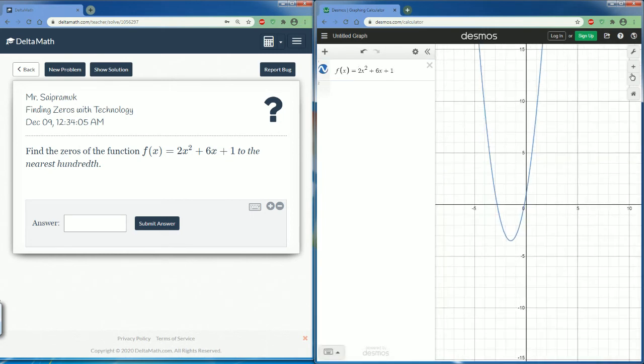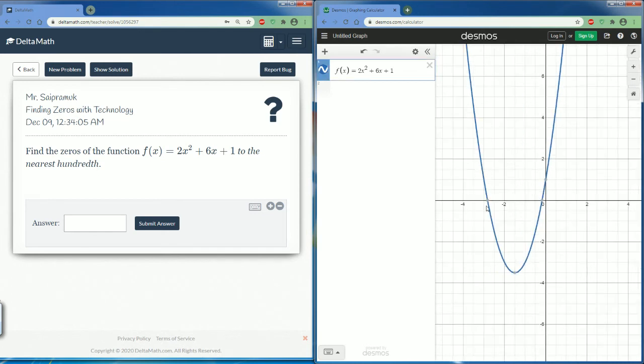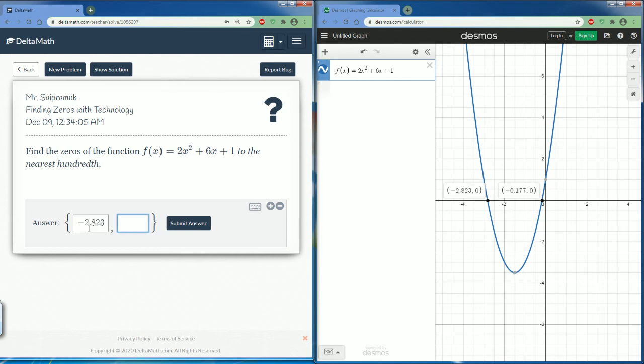2x² + 6x + 1. Move it a little bit. Zoom in if you can't see it. Here are my two solutions. So negative 2.823 comma negative 0.177. Now, make sure you round it. So you see the last number here is a three. So this number is going to round it down just to 0.82.